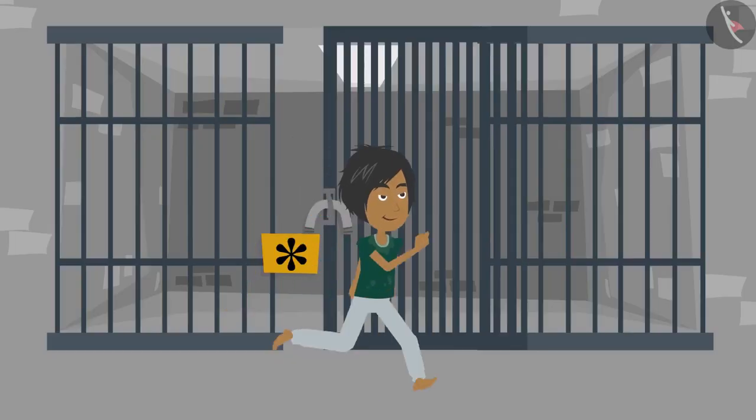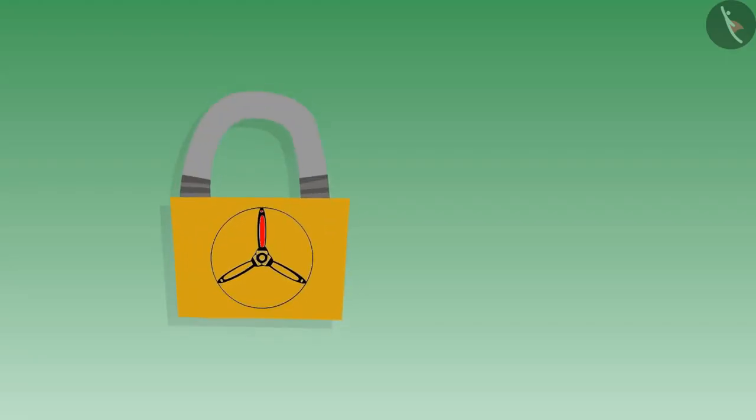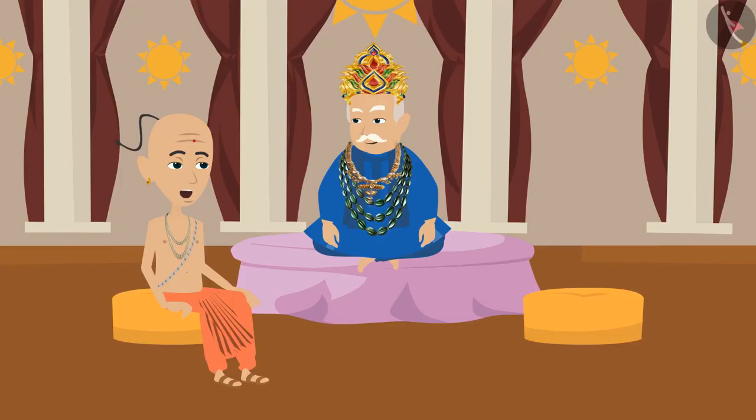To solve this problem, I painted one side of both the locks. This helped the jailer to identify whether the lock is open or closed. How does that happen, Tenali Rama? Look.